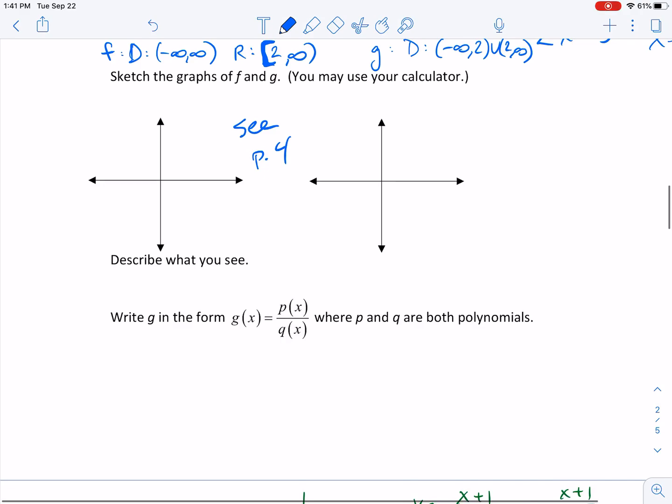And then describe what I see. I see that it's got a, it has a, I see a parabolic asymptote. Okay, because it was approaching that parabola.